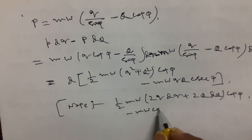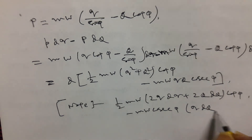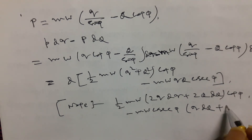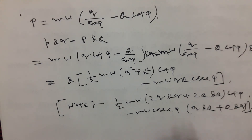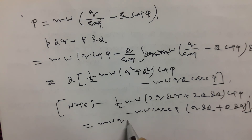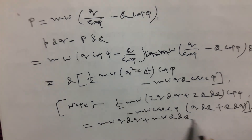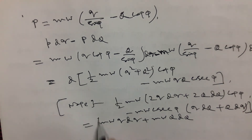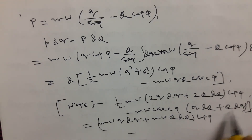The remaining term is mω cosec φ times (q dQ plus Q dq), which is the product rule differential of mω q Q cosec φ. Combining both parts, the 2s cancel and we recover the earlier result, confirming it is a perfect differential.